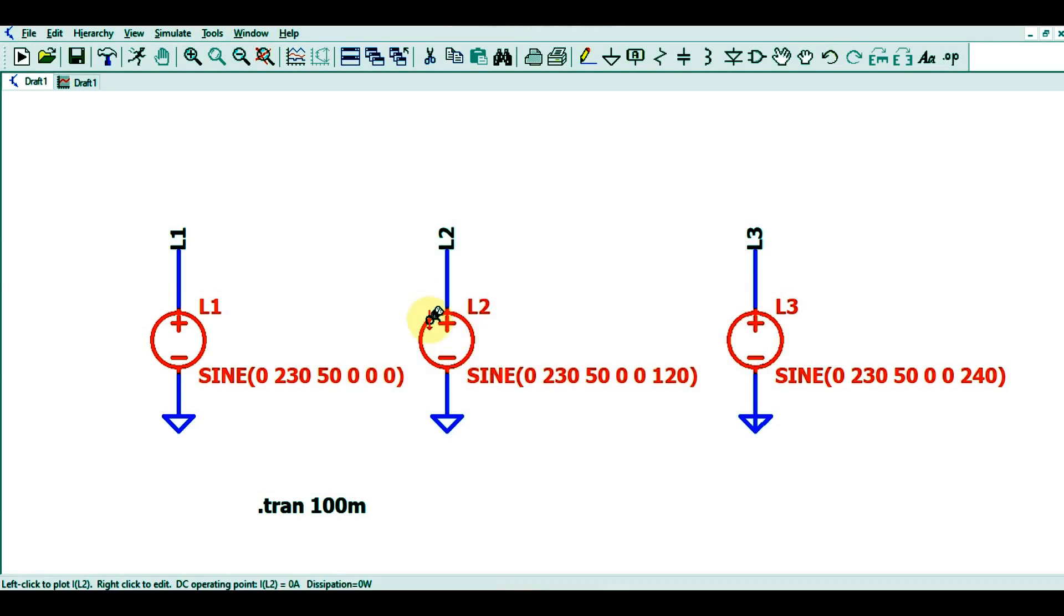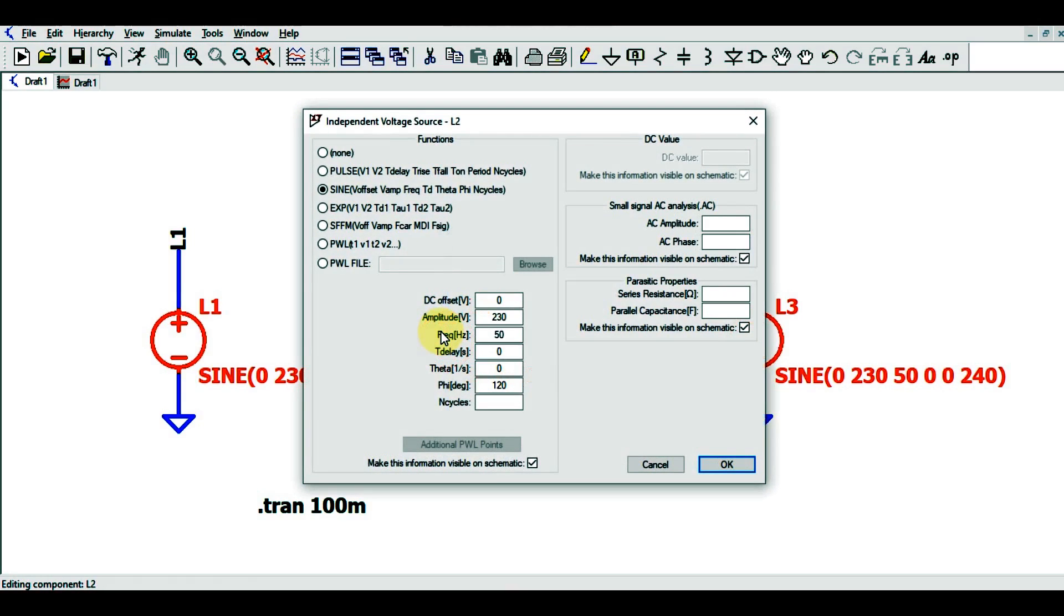for L1. If you right-click on L2, you can see its properties. The rest of the parameters are the same, and you can see only the phase difference, which is 120 degrees. So the